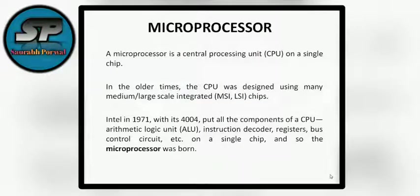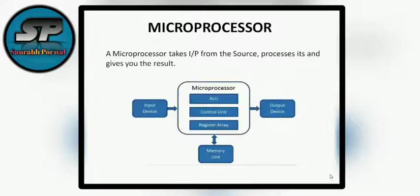What is a microprocessor? A microprocessor is a CPU on a single chip. In older times, the CPU was designed using many medium- and large-scale integrated circuits. Intel in 1971 with its 4004 put all the components of the CPU — that is, ALU, instruction decoder, registers, and bus control circuit — all on a single chip, and so the microprocessor was born. In a sense, a processor takes input from a source, processes it, and gives you the result.